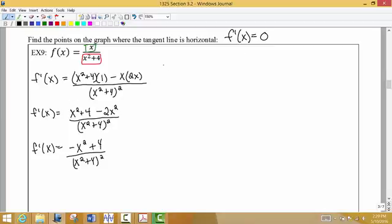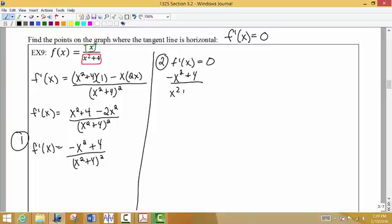So the first thing we want to do is find our derivative. Once we have the derivative, we want to set that derivative equal to zero. So our first step is to find the derivative. The second step is to take the derivative, whatever it is, and set it equal to zero. So our derivative is negative x squared plus 4 all over x squared plus 4 squared.